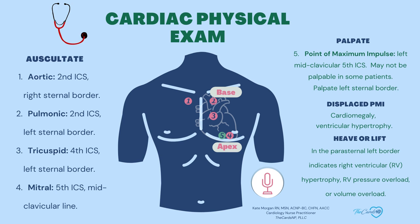Listen for a murmur of aortic stenosis or aortic regurgitation, which we'll talk about in a little bit. Then move to the pulmonic area at the left upper sternal border, second intercostal space. If you feel a heave or a lift in this area, it may indicate pulmonary arterial hypertension.